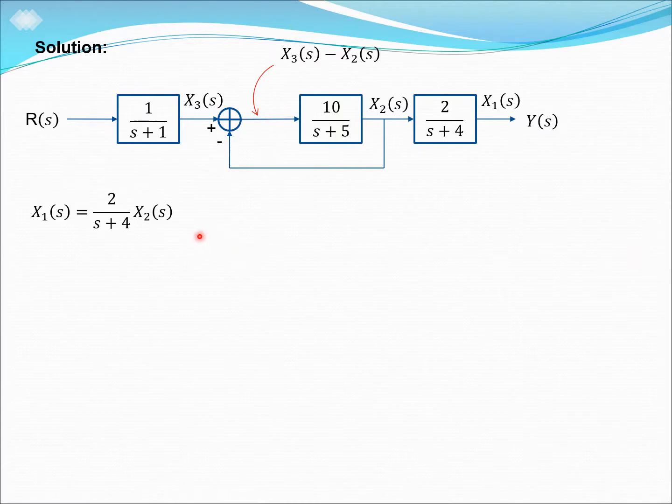So, for the first state space equation, we are going to take the equation from this block over here. Here, we know that x1s is equal to 2 over s plus 4 multiplied with the input of x2s, so we will get this equation.